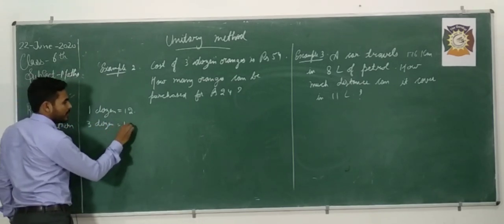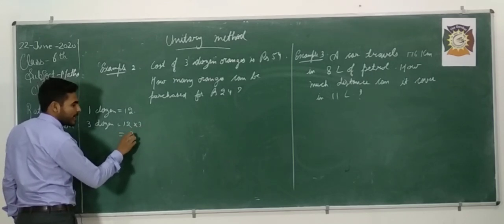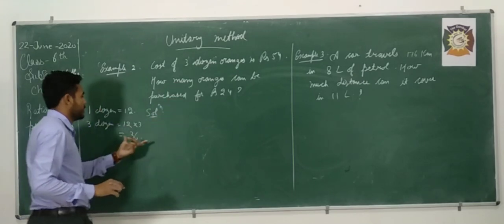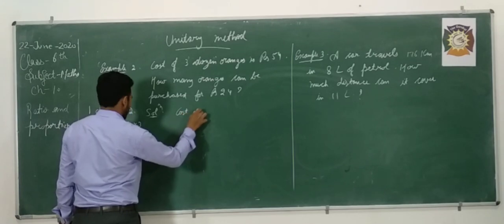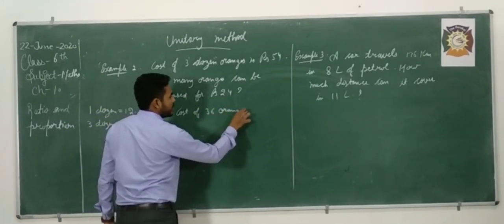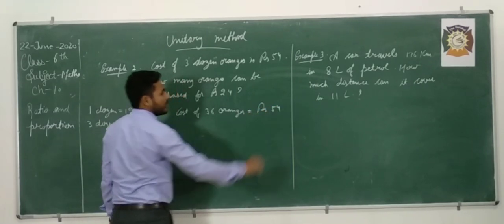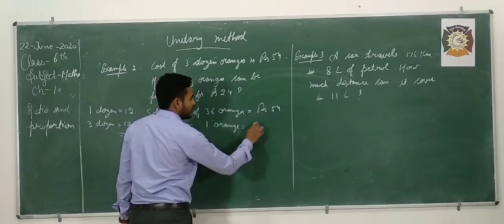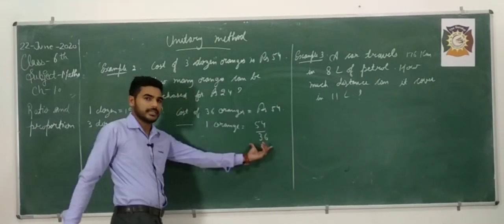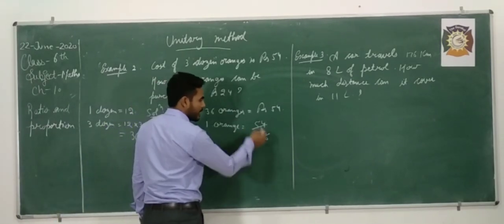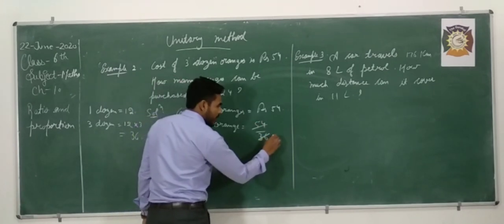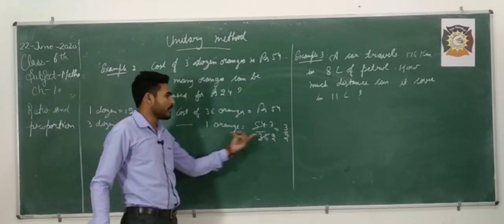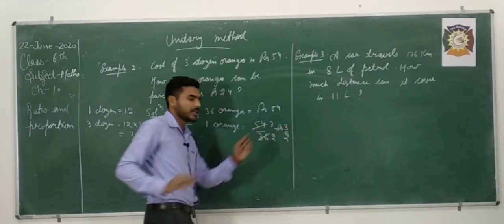3 dozen is equal to 12 into 3, means 36. That means if we want to find the solution of this example, cost of 36 oranges is equal to Rs. 54. And cost of 1 orange is equal to 54 by 36. Is it clear? Now, we cut both denominator and numerator. 18 to the 36 and 18 to the 54.